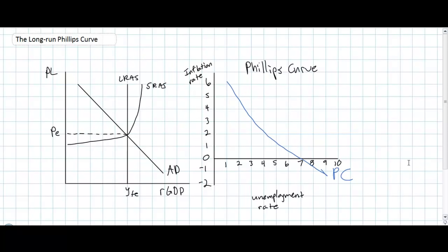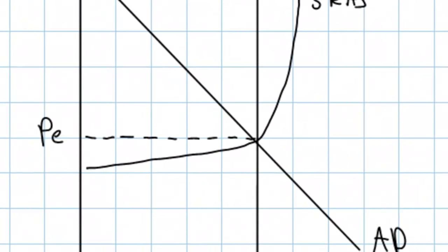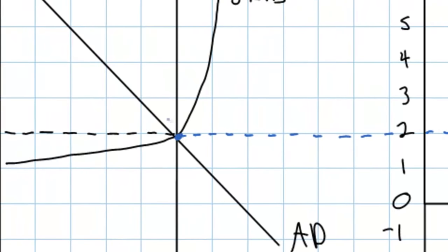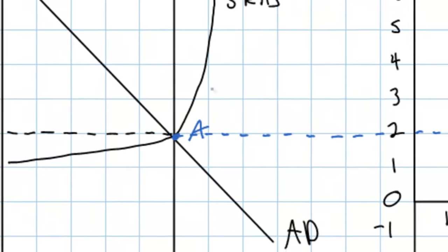Our graphs look just like they did at the end of our previous lesson. In the graph on the left we've got an economy producing at its full employment level of output with a stable price level equal to PE. We'll assume that at this current equilibrium full employment level there is an inflation rate of around two percent and an unemployment rate of just over four percent, corresponding to point A on both our Phillips curve and our aggregate demand aggregate supply diagram.